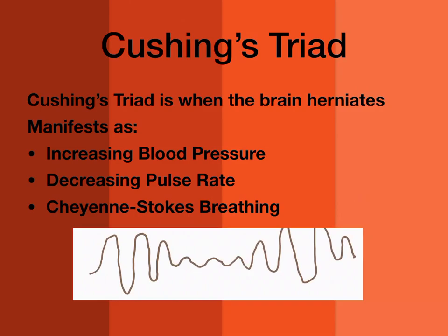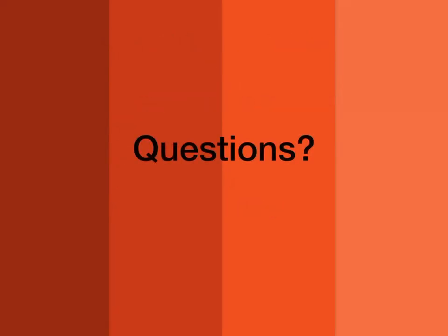So that's a quick overview of intracranial pressure and cerebral perfusion pressure, and what happens when we have bleeding in the brain. Hope this helps.